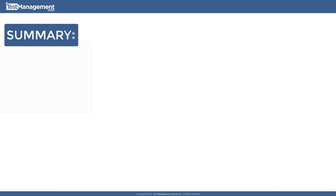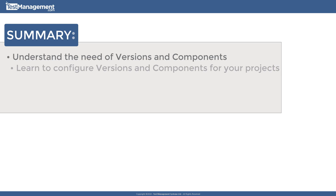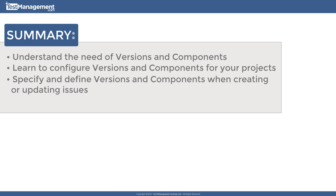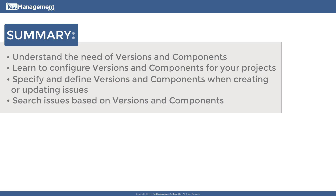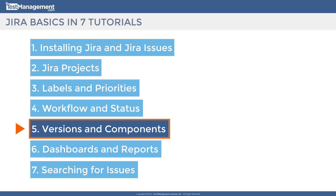In summary, this module covered the key learning objectives: why we need versions and components and how to use them to categorize issues within a project by component and by version. We've seen how to configure versions and components in the project settings area within Jira, how to specify them when creating or modifying issues, and how to use the search criteria — fixed version, affects version, and components — to bring up specific sets of issues.